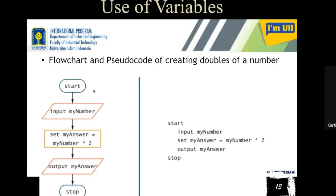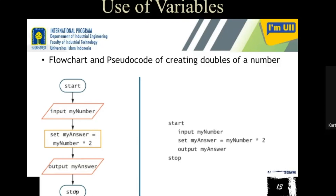For example, here is a flowchart and a pseudocode for a problem. The problem is: if I give you a number, give back the double of that number. If I ask you to write a flowchart, it looks like this; if I ask you to write a pseudocode, it looks like this. You have to start — as I explained in the last class — with a start symbol and a stop symbol, which are always placed at the beginning and end of the flowchart.